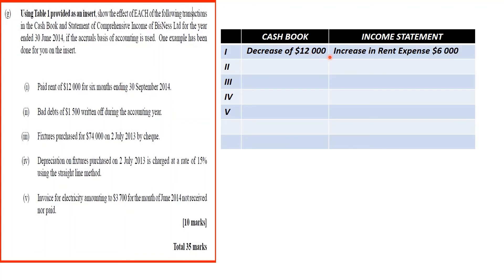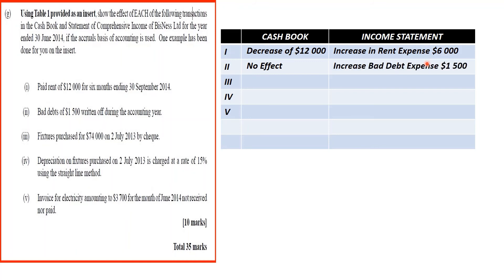The remaining $6,000 would have been prepaid and would not appear in the income statement. The next item: bad debts of $1,500 written off during the accounting year. That will have no effect on the cash book because it does not involve either cash or checks. On the income statement, we would have an increase in bad debt expense of $1,500.